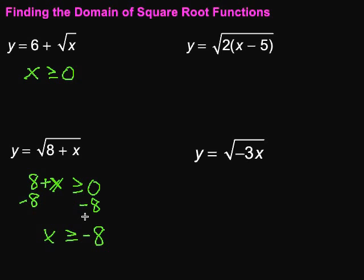And you might say, wait a minute, we can't put negative stuff under square roots. Well, what happens if we do? It's greater than or equal to negative 8. If we put that in, 8 plus negative 8 would be zero. Square root of zero, we can do that.